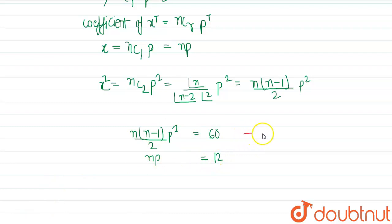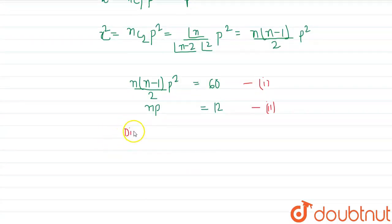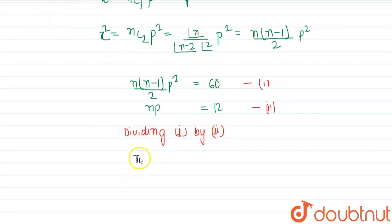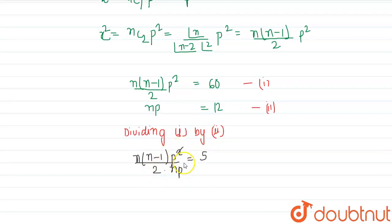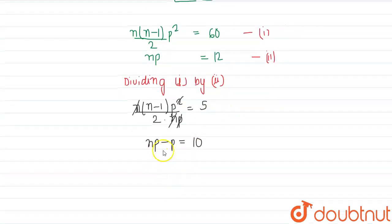Now we consider equation 1 and equation 2. Dividing equation 2 by equation 1: [n·p²/2] / [n·p] = 60/12 = 5. Cancelling p and n, we get (n−1)·p/2 = 5, so np − p = 10. Since np = 12, we get p = 12 − 10 = 2.